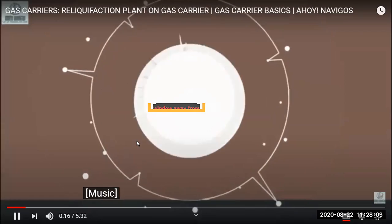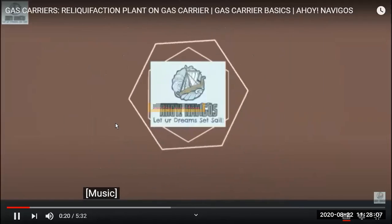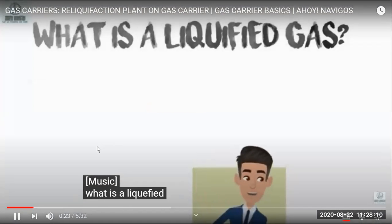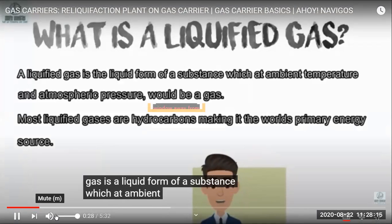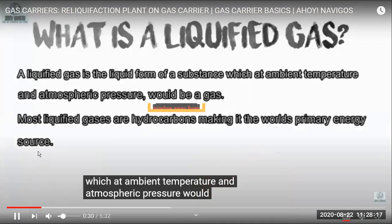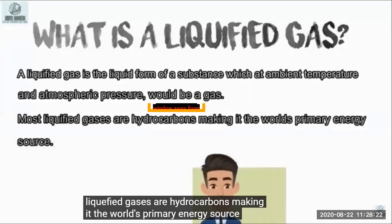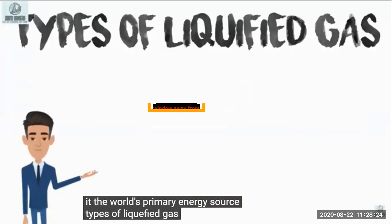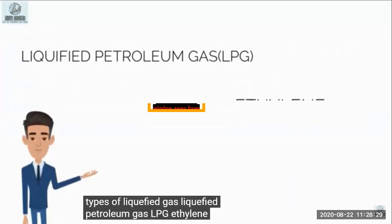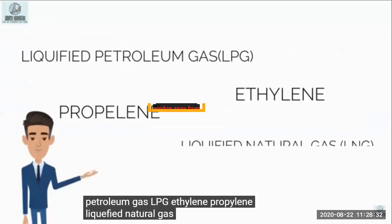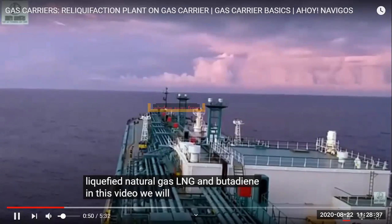Let's continue to see the reliquefaction plant on gas carriers. First, we will see what is a liquefied gas. Liquefied gas is a liquid form of a substance which is at ambient temperature and pressure as a gas. Most liquid gases are hydrocarbons, making them the world's primary source of liquefied gas. Examples of liquefied petroleum gas include ethylene, propylene, liquefied natural gas (LNG), and butadiene.